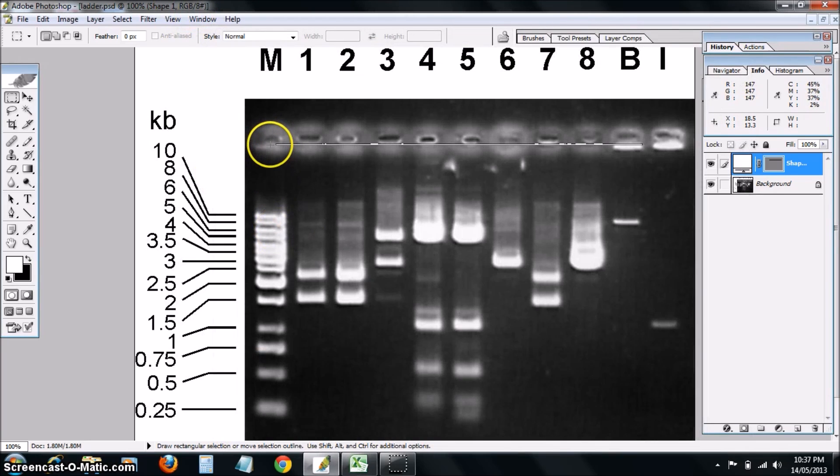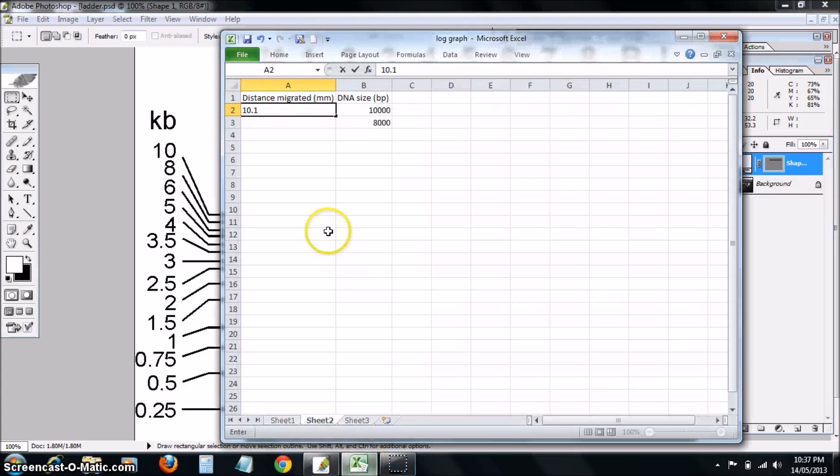The distance that the second band has migrated, so it's slightly smaller, from the well down to the front of the DNA happens to be 11 millimeters. So there we go, and we just keep on filling that out.